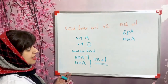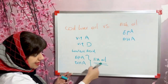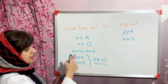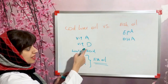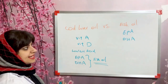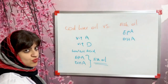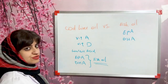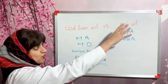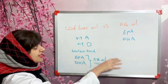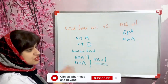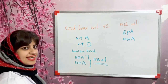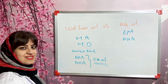Cod liver oil consists of fish oil — including EPA and DHA — plus linoleic acid, vitamin D, and vitamin A. So these two terms are not the same and we should not substitute them for each other. Fish oil contains only EPA and DHA, while cod liver oil contains fish oil plus vitamin A, vitamin D, and linoleic acid.